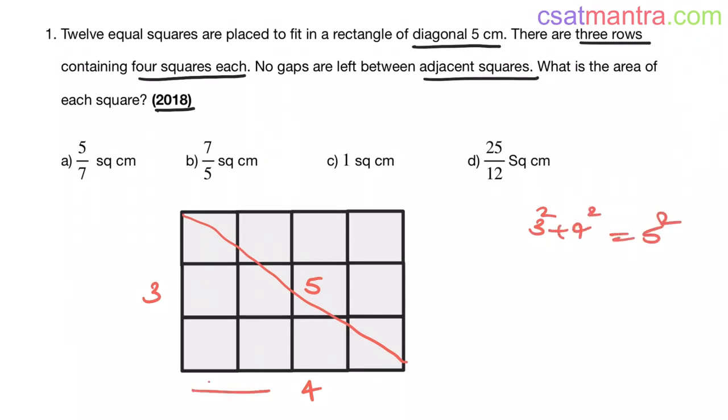So this is 4 cm, that means each square has a side of 1 cm. So area of each square is equal to 1 into 1 that is equal to 1 square cm. So C is your answer.